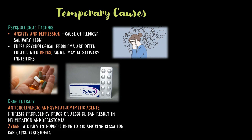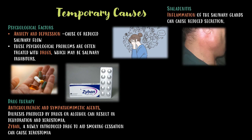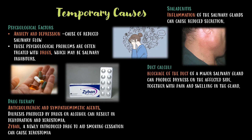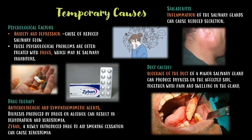Zyban, a newly introduced drug to aid smoking cessation, can cause xerostomia. Sialadentitis is the inflammation of salivary glands and can cause reduced secretion. Duct calculi — blockage of the duct of a major salivary gland — can produce dryness on the affected side, together with pain and swelling in the gland.